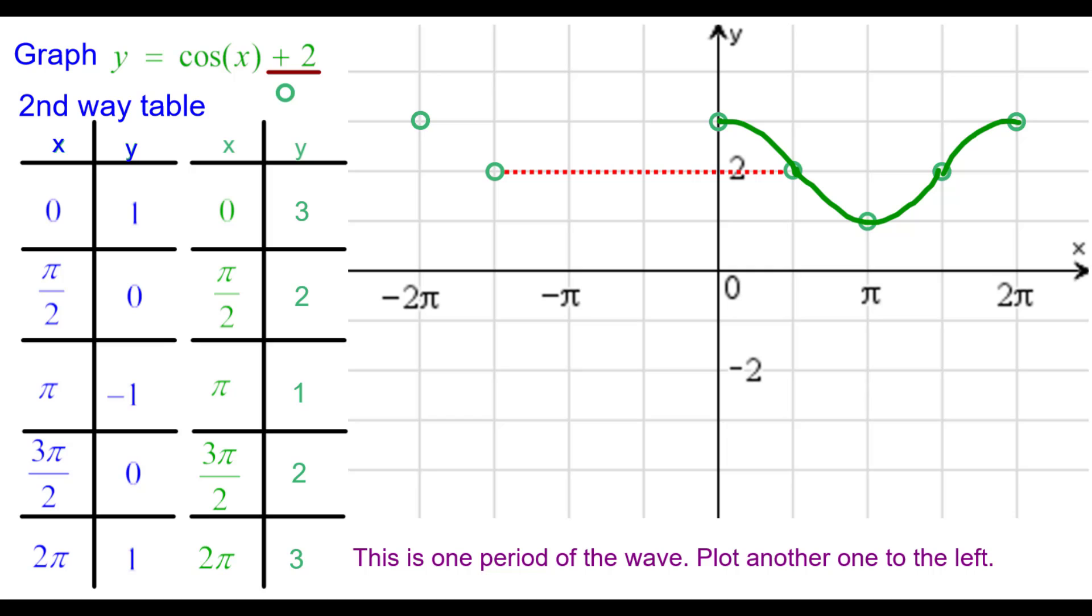Back a period to negative pi comma one. Back a period to negative pi over two comma two. And now again, we can connect the points as another cosine wave.